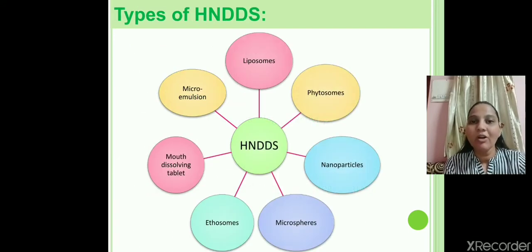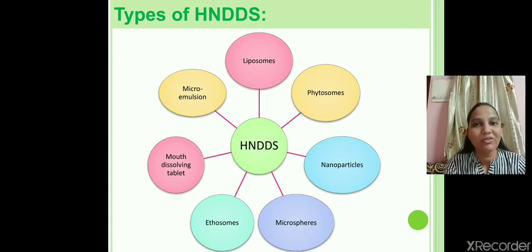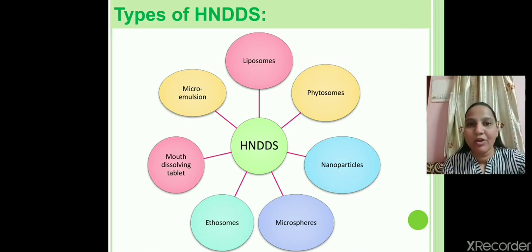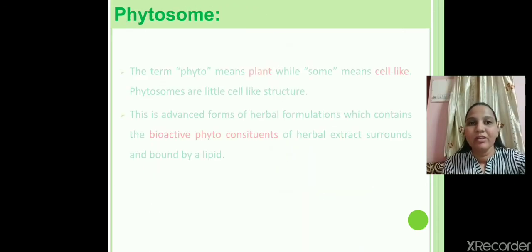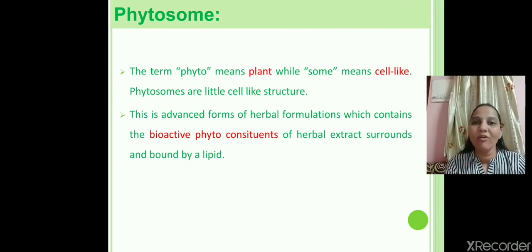There are different types of herbal novel dosage forms: glycosomes, phytosomes, microspheres, nanoparticles, and micro-emulsions. We will now discuss phytosomes as a novel dosage form.